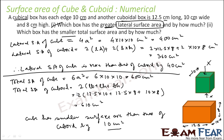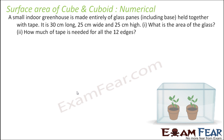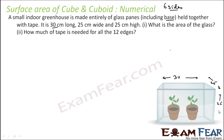So one thing you know: the cube has more lateral surface area, but the cube has less total surface area. Both are different — it can happen that one shape has more lateral surface area but less total surface area. Next example: a small indoor greenhouse is made entirely of glass panes, including the base, so we are looking at 6 sides. The dimensions are 30 centimeter long, 25 centimeter wide, and 25 centimeter high, all in centimeter.